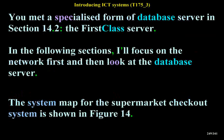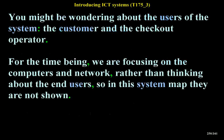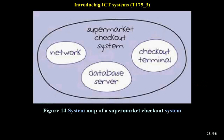In the following sections, I'll focus on the network first and then look at the database server. The system map for the Supermarket Checkout System is shown in Figure 14. You might be wondering about the users of the system — the customer and the checkout operator. For the time being, we are focusing on the computers and network rather than thinking about the end users, so in this system map they are not shown.